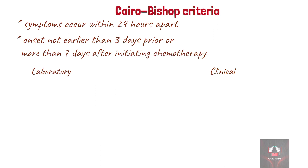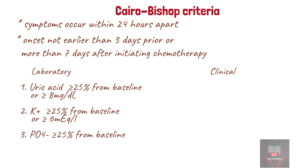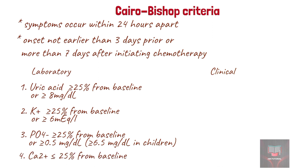Serum uric acid of at least 25% increase from baseline, or at least 8.0 mg per dL. Serum potassium of at least 25% increase from baseline, or at least 6.0 mEq per liter. Phosphate of at least 25% increase from baseline, or at least 4.5 mg per dL in adults, or 6.5 mg per dL in children. Calcium of at least 25% decrease from baseline, or less than 7.0 mg per dL.